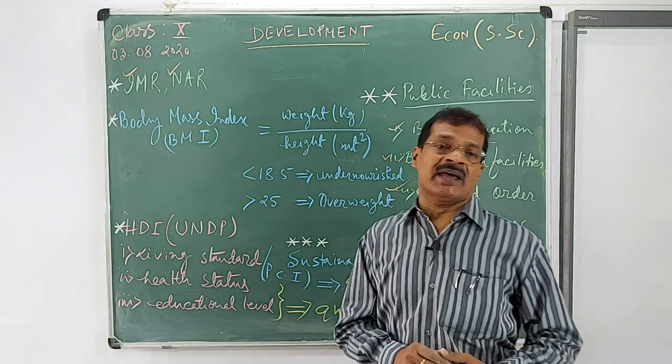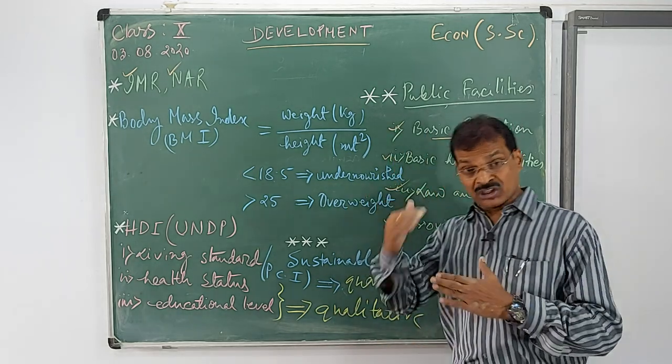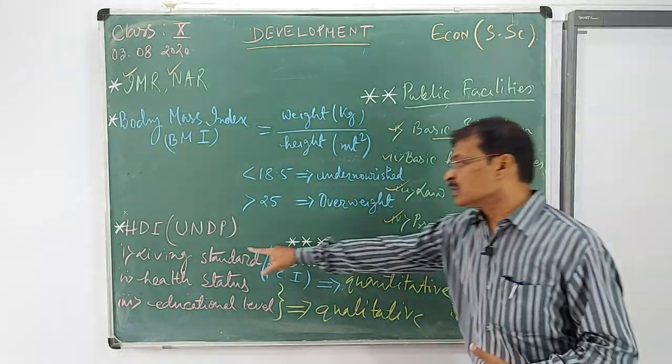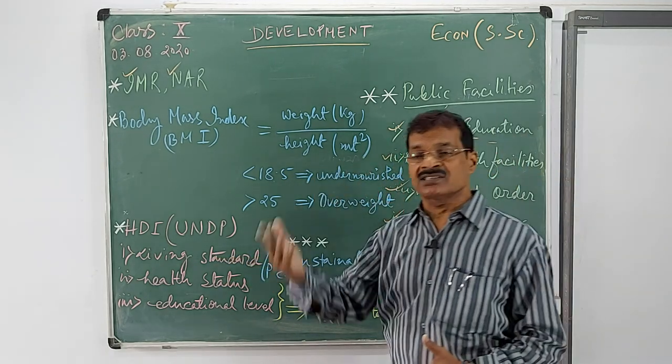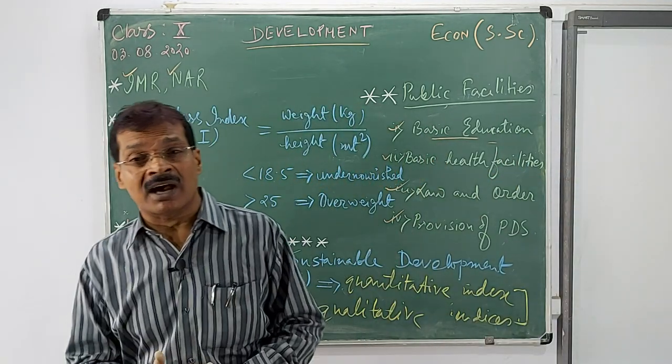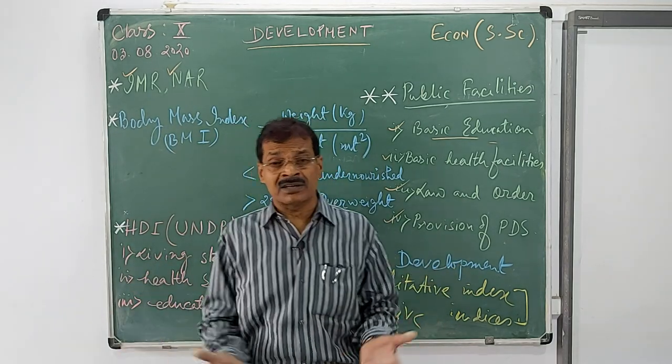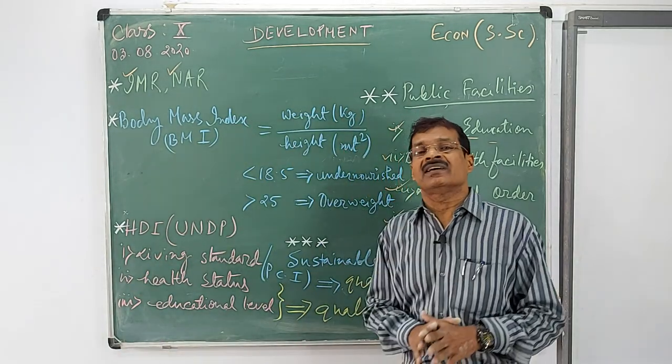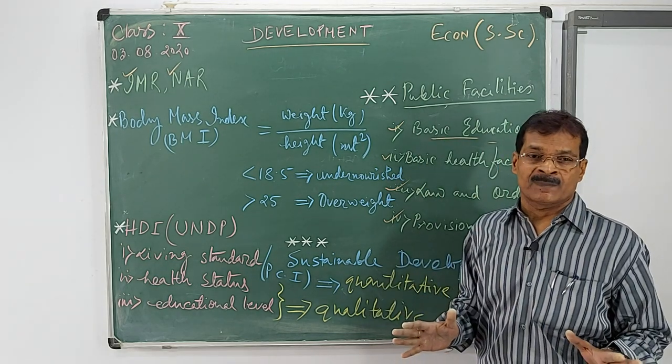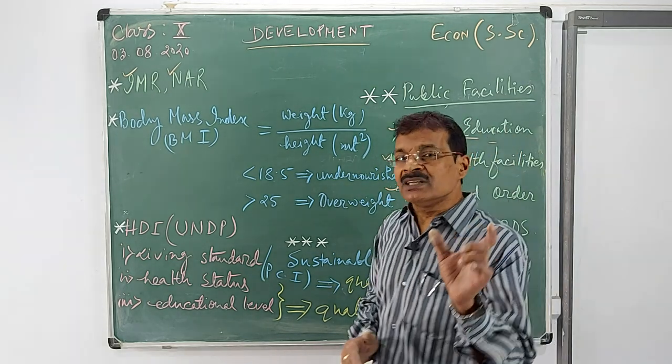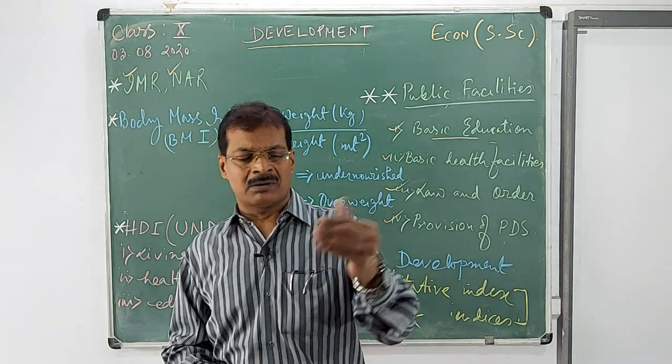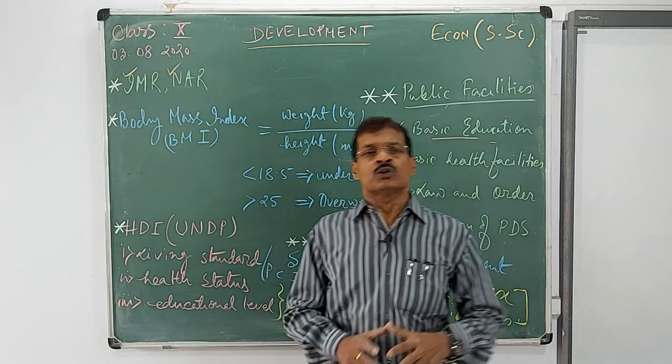Barring the development standard by World Bank, which is based completely upon this living standard, per capita income. Whose PCI is high is considered to be a good developed country, and whose it is low they are not developed country.